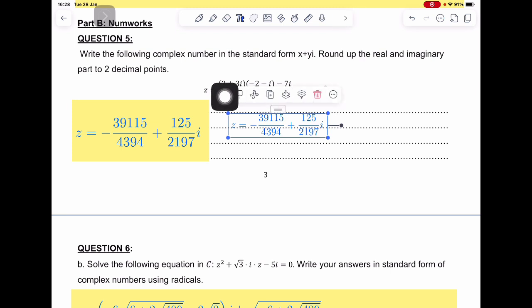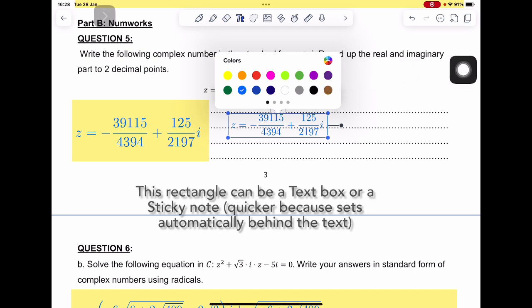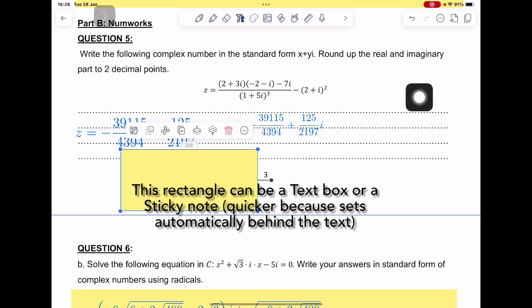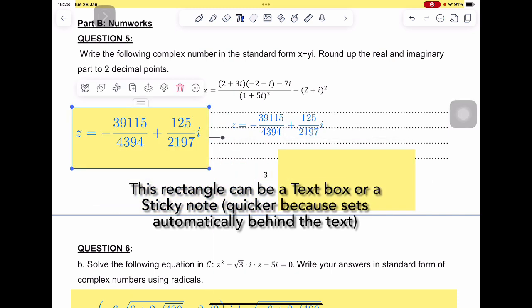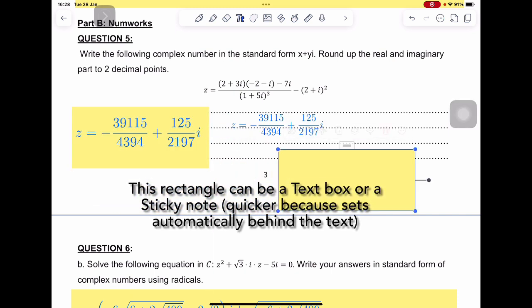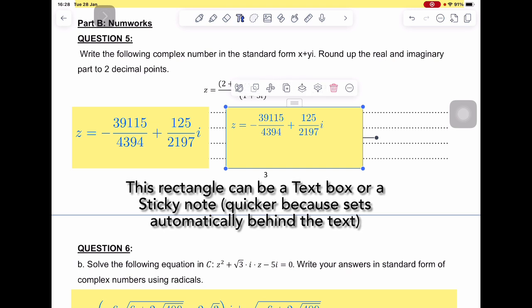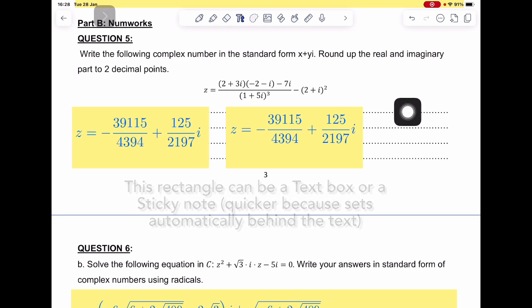With this menu, I cannot yet give this text box a background, which is annoying. But what I can do is create a text box. Here I will duplicate it and I can come and put this text box below my writing. So my writing is nice and clear and we are not bothered by those lines.